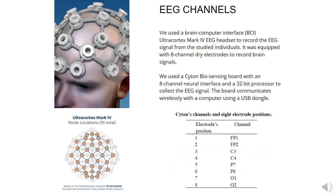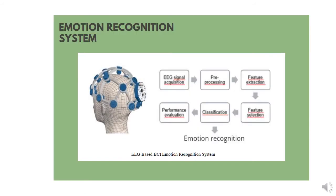We used a brain-computer interface OpenBCI Mark IV EEG headset to record the studied individuals' EEG signals. It was equipped with eight-channel tri-electrodes to record brain signals. We used a cyto-biosensing board with an eight-channel neural interface and a 32-bit processor to collect the EEG signal. The board communicates wirelessly with a computer via a USB dongle. We applied the 10-20 system diagram with channels 1 to 8 of the OpenBCI default setting. In the figure, we show the system electrode locations.